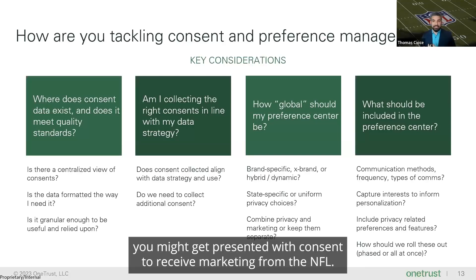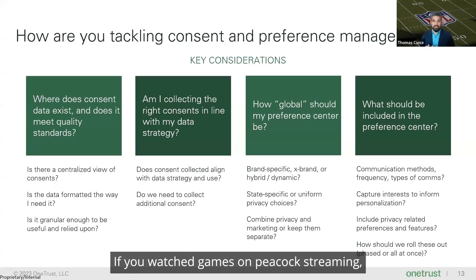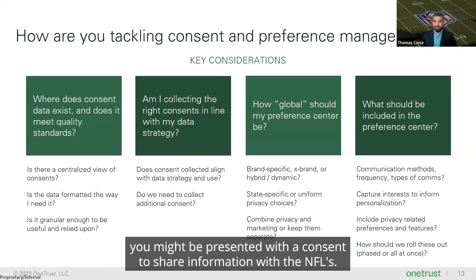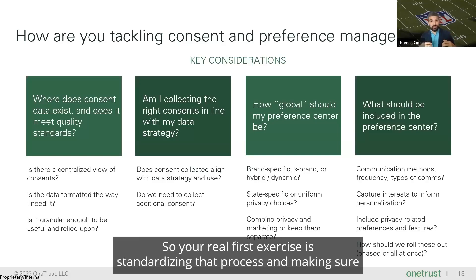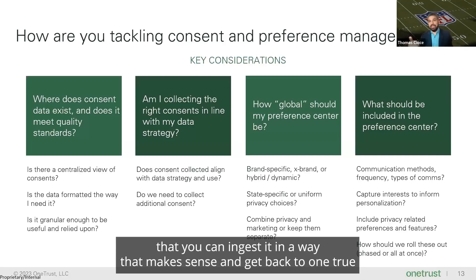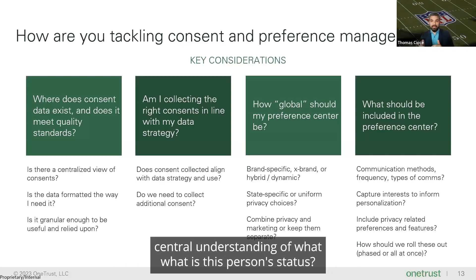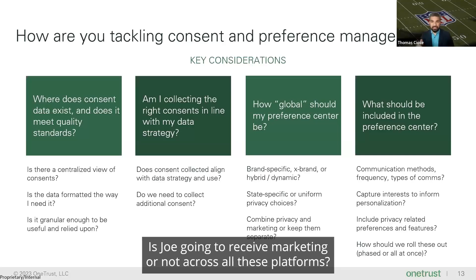If you go and play Madden, you might be presented with consent to receive marketing from the NFL. If you watch games on Peacock streaming, you might be presented with a consent to share information with the NFL. So you have all these flags coming in from all these different places. Your real first exercise is standardizing that process and making sure you can ingest it in a way that makes sense, and get back to one true central understanding of what this person's status is — is Joe going to receive marketing or not across all these platforms?